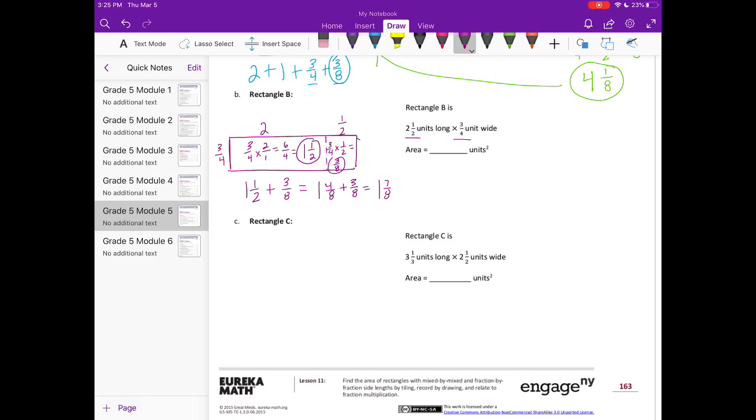Verifying by multiplication: 2 and 1 half times 3 fourths. Converting to 5 halves times 3 fourths equals 15 eighths. 8 goes into 15 one time with 7 left over, so 1 and 7 eighths units squared.